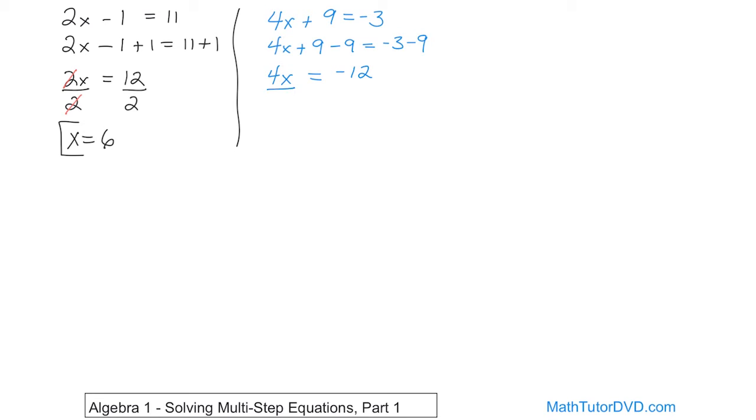So now this problem looks like what we've done in the past. To get rid of the 4, since it's multiplied, we divide both sides of the equation by 4. And what that does is this 4 will cancel with this one. And so on the left, all I have is x. And on the right, what is 12? Negative 12 divided by 4. 12 divided by 4 is 3. And since they're opposite signs, it's going to be negative. So negative 3, that's the final answer.